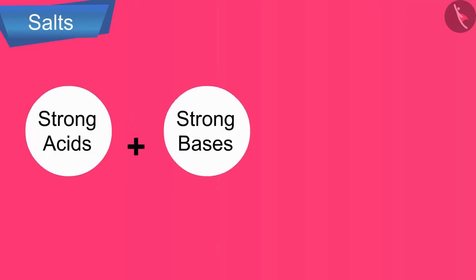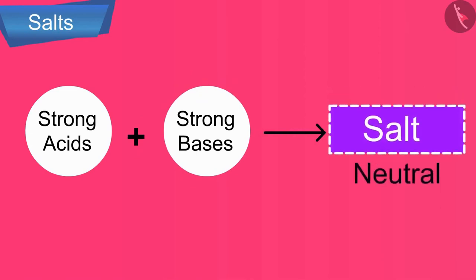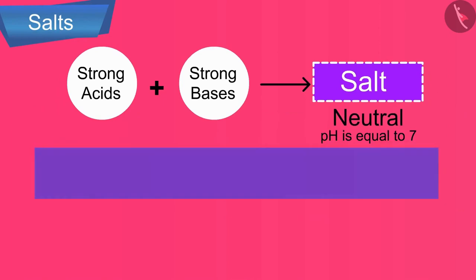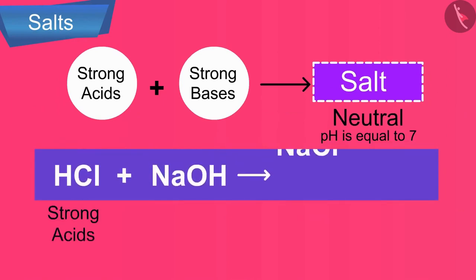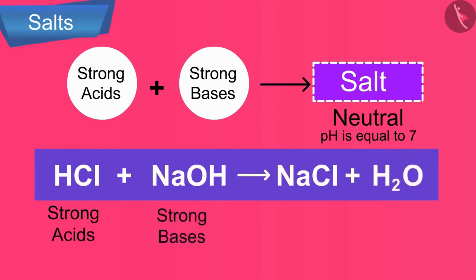The acidic nature and the basic nature of some salt solutions can be explained on the basis of hydrolysis of salts. Firstly, the salts of strong acids and strong bases give neutral with pH is equal to 7. For example, sodium chloride is formed from a strong acid, hydrochloric acid, and a strong base, sodium hydroxide. So, they produce a neutral salt.